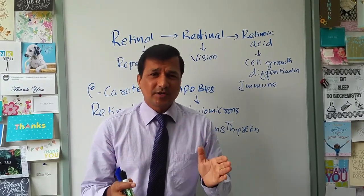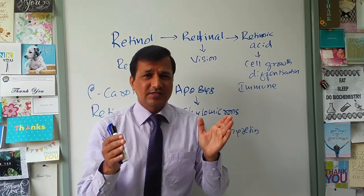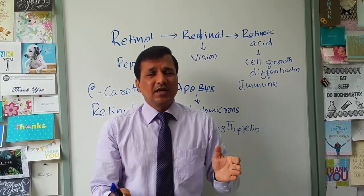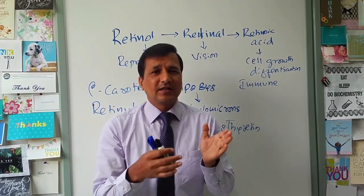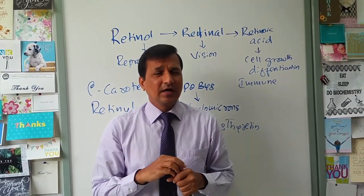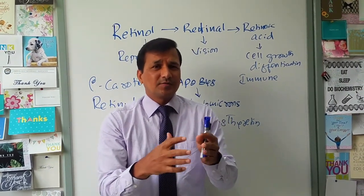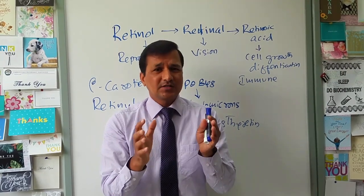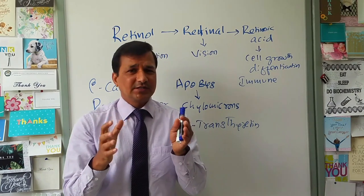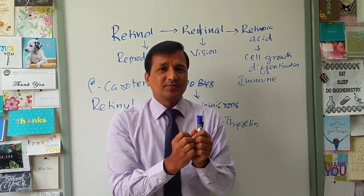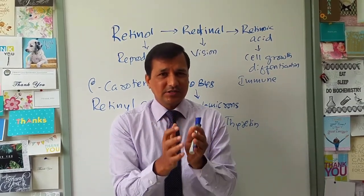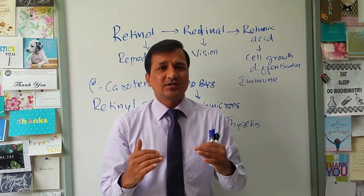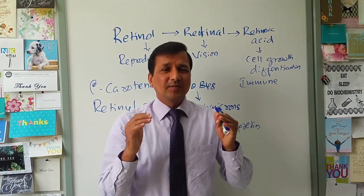Retinaldehyde in photoreceptor rod cells exists as 11-cis retinaldehyde, which combines with opsin to form rhodopsin. When light falls on rhodopsin, it bleaches — opsin separates from all-trans retinaldehyde, triggering neuronal signaling. This conformational change activates transducin, a G protein with alpha, beta, and gamma subunits. The alpha subunit takes up GTP, separates from beta-gamma, and activates cyclic GMP phosphodiesterase, which decreases cGMP concentration in photoreceptor cells.